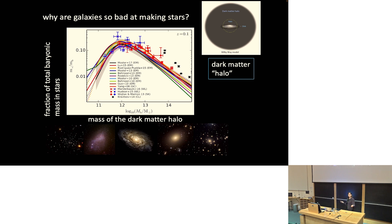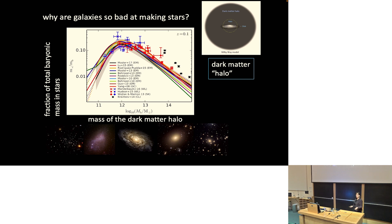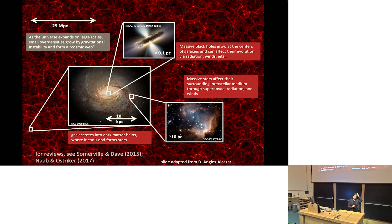When we compare the number of dark matter halos in our simulations to the number of galaxies we count with telescopes, we need to assume something a little strange: galaxies are very bad at making stars. Galaxies can only convert a small fraction of the available gas into stars — at peak maybe around 20%, and as low as 1%. Remember I already said only 7% of all matter in the universe is in stars, so for some reason galaxies are bad at making stars — you'd think that would be their one job. We'd like to understand why.